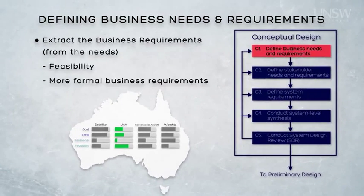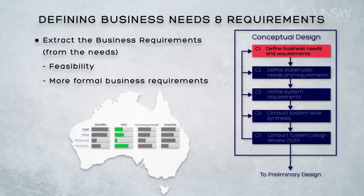These business requirements will be more formally stated than the needs, and will eventually guide the development of engineering requirements for our system. Whilst the business needs paint a picture of the problem and the desired solution, the resultant business requirements are a further decomposition of the needs, so that we can understand exactly what the business requires from the ultimate solution when it's deployed. We will capture these requirements in a structured artefact that we are going to call the Business Requirements Specification, or simply the BRS.